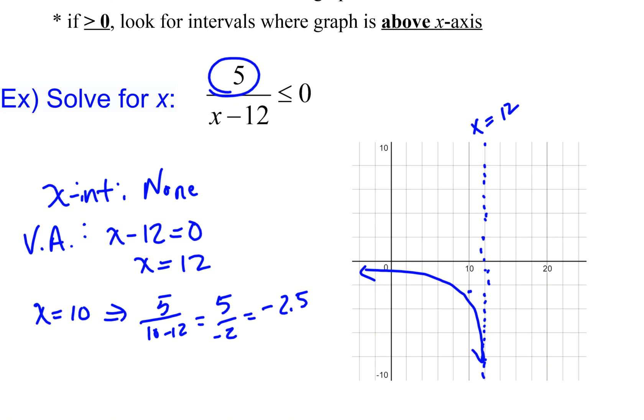On the other side, if x equals 14, then I have 5 over 14 minus 12, which is 5 over 2, which is positive 2.5. So at x equals 14, I go up 2.5, and I have a matching graph on this side.